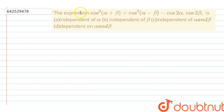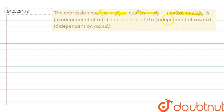Hello everyone. Our question is: the expression cos²(α+β) + cos²(α-β) - 2cos(2α)·cos(2β) is — (a) independent of alpha, (b) independent of beta, (c) independent of alpha and beta, or (d) dependent on both alpha and beta.